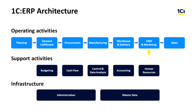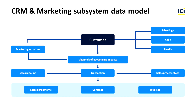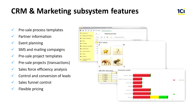The CRM and marketing subsystem is designed for collecting information, analyzing, and controlling interactions with customers. This subsystem manages the relationship with customers from the initial call, email, or meeting to the conclusion of the contract and invoicing. We can control the process step by step and analyze the result of interaction. 1C ERP helps to monitor marketing activities and track the effectiveness of channels of advertising impacts. With the CRM subsystem, we can create pre-sale process templates, register contacts with new partners, and store partner information on counterparties and their employees. You can also plan marketing events and create SMS and mailing campaigns.